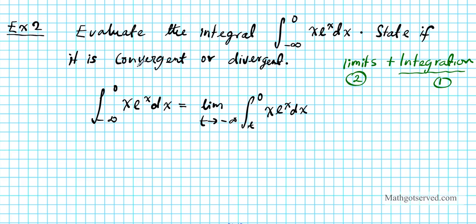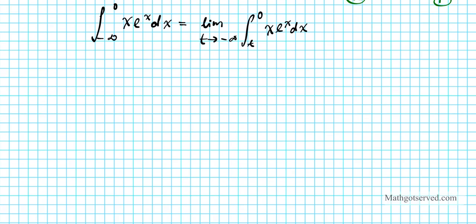If you arrive at a number then it's convergent and that value represents the value of the integral. If you get infinity or negative infinity then it's a divergent integral. So let's go ahead and evaluate this — we're going to first evaluate the definite integral and then find the limit of our result. We have the limit as t approaches negative infinity of the integral from t to 0 of x e to the x dx.